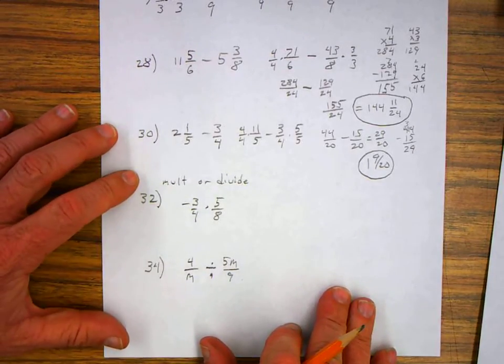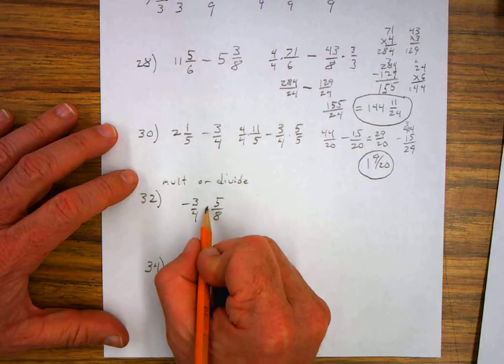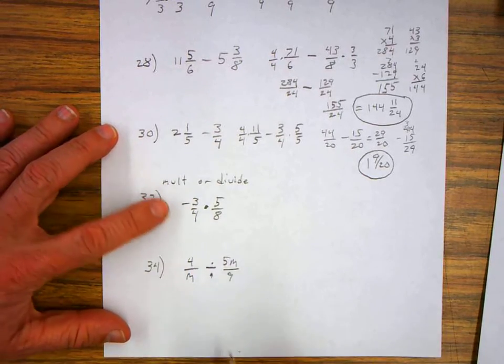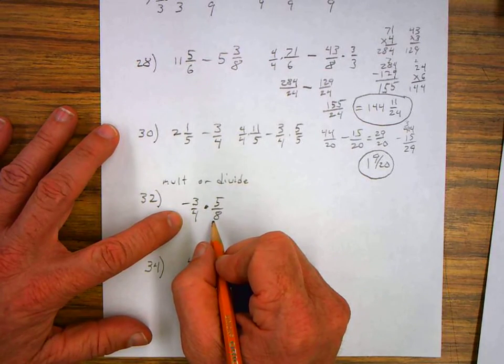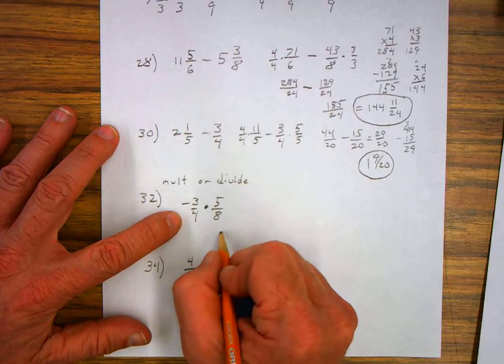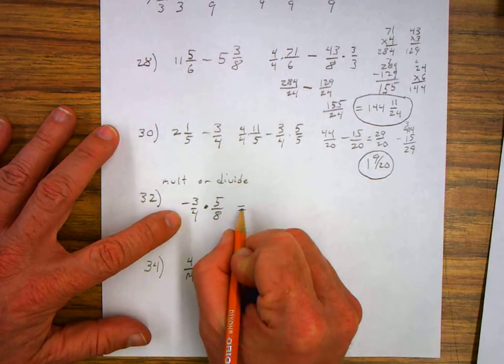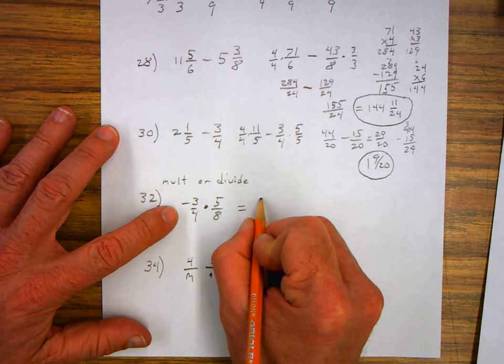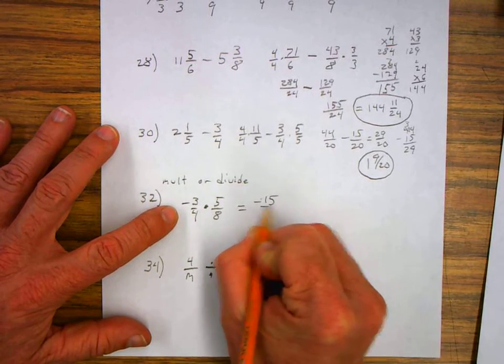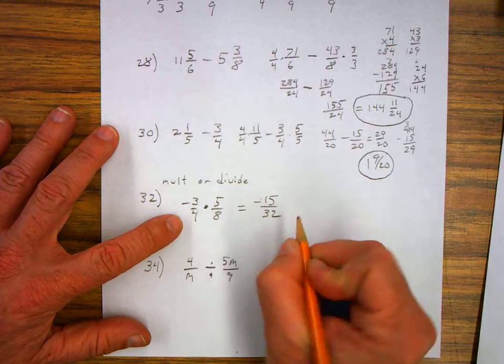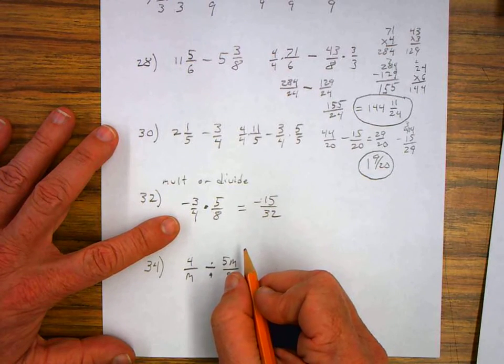On these last two, we want to multiply or divide. In this case, we want to multiply. So I cannot reduce these fractions in any way. So I'll just multiply straight across. And this is negative three times five is negative fifteen. Eight times four is thirty-two.